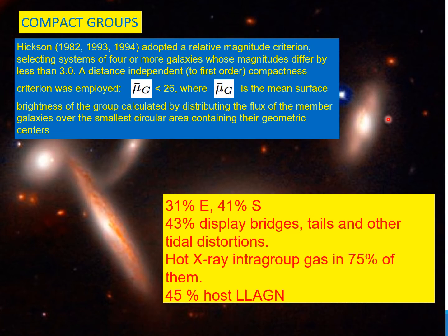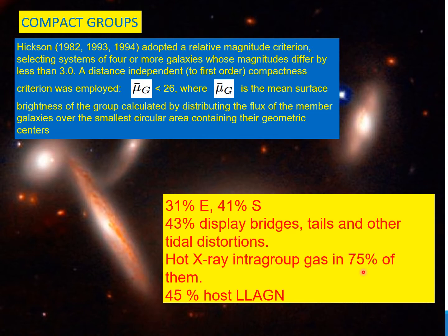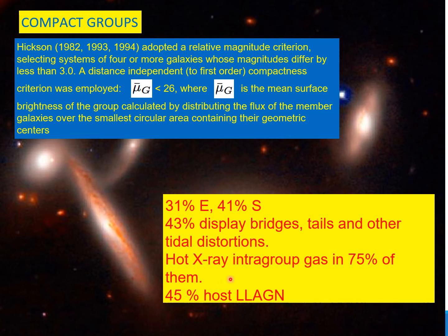Compact groups are defined morphologically by a criterion that determines compactness by selecting a small aperture to enclose at least four galaxies, within which the surface brightness should be less than 26 magnitude. This is a working definition. The population distribution in compact groups is roughly 31% ellipticals, 41% spirals, 43% display bridges, tails, and tidal distortions, 75% show X-rays indicating an intragroup medium, and 45% host low-luminosity AGN.